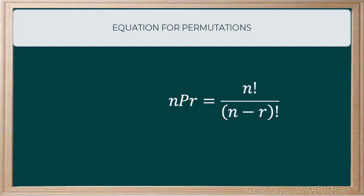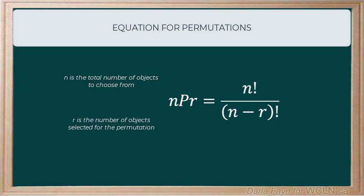Here's the equation that we use to determine the number of permutations when all objects are distinguishable. Remember, n is the total number of objects that we can choose from, and r is going to be the number of objects that we're going to select for the permutation, or the number of objects that we're actually ordering.